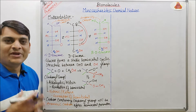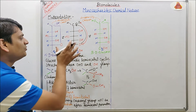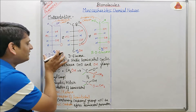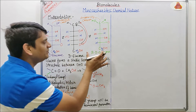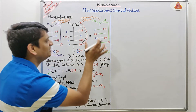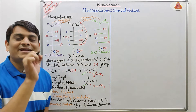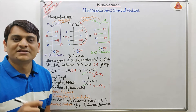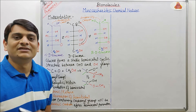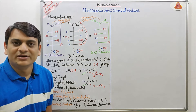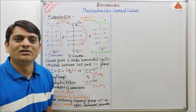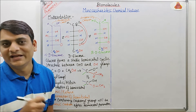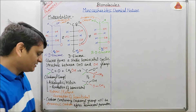After formation of the hemiacetal, open-chain glucose is converted into alpha D-glucose and beta D-glucose, both cyclic in nature. This cyclic structure is hexagonal, containing five carbons and one oxygen, and can be represented as a Haworth projection.